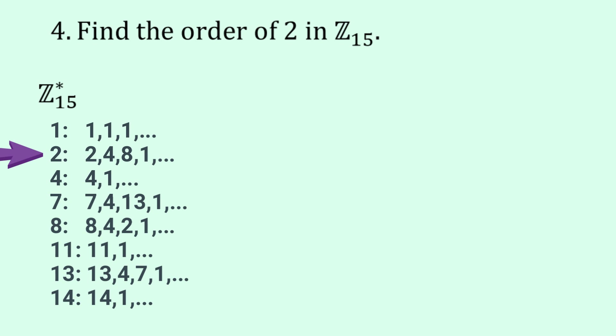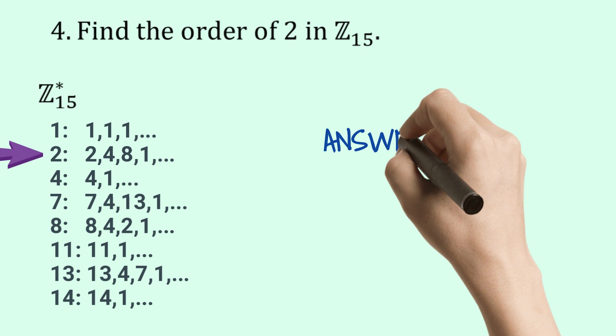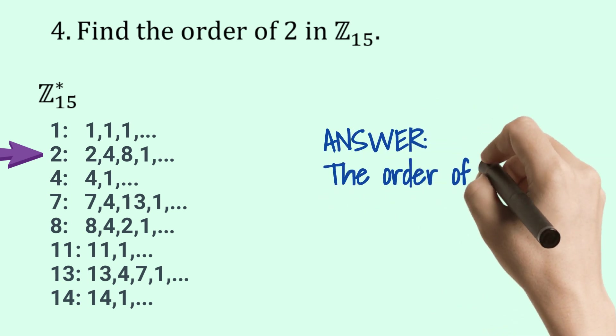2 to the 4 actually equals 16, but 16 in Z 15 is 1. So 2 to the 4 is 1. And 4 is the smallest power. So the answer is the order of 2 is 4.